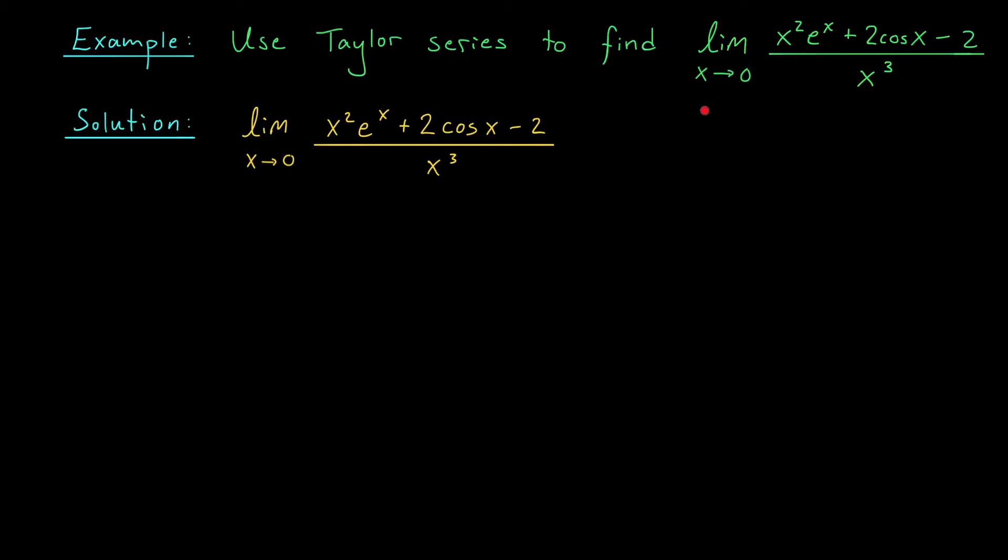Suppose we wish to find the limit as x goes to zero of this nasty expression: x squared e to the x plus 2 cos x minus 2, all divided by x cubed. Now note that you can't just plug in zero to this thing. This is an indeterminate form, zero over zero. You can try L'Hopital's rule, but you're going to have to perform it three times before you get an answer. Each time will require one or more uses of the product rule. Instead, let's see if we can solve this problem using Taylor series.